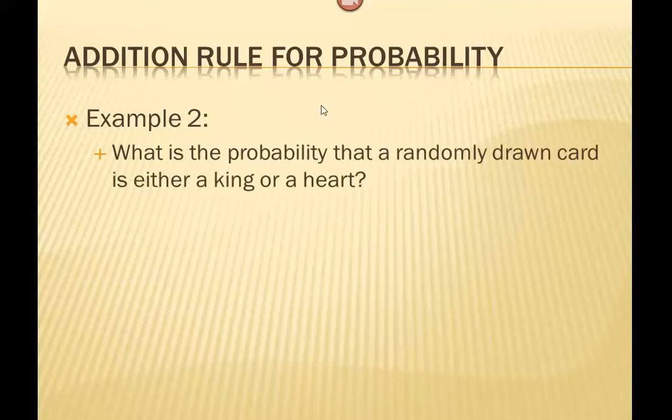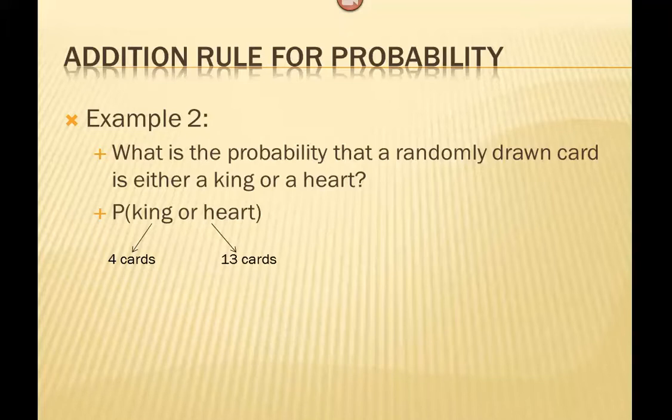For example, if we were looking at the probability that we were going to pick a king or a heart, if we write this out symbolically and counted out our kings, there's four kings in a deck of cards. If we look at the number of hearts, there's 13 cards that are hearts. Based on the previous example, we might falsely assume that 4 out of 52 plus 13 out of 52 gives me the probability of this event. But if we actually looked at the number of cards in that deck that were successful outcomes, there's only 16. Why is that?